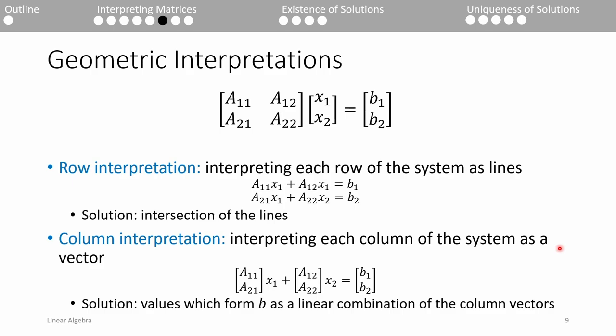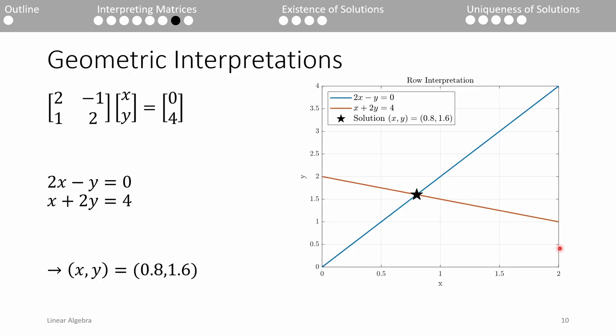Now that we've discussed the physical interpretation of a linear system, let's discuss a more geometric interpretation. A system can be interpreted using either the rows or columns. In the row interpretation, we treat each equation as a standalone entity. We graph each equation and find the point of intersection. This point represents the solution to both of these equations. This is the most intuitive way of interpreting a system of equations.